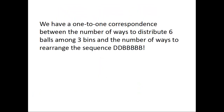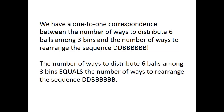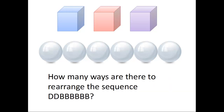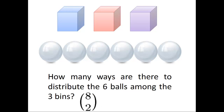Thus, we have a 1-to-1 correspondence between the number of ways to distribute 6 balls among 3 bins, and the number of ways to rearrange the sequence with 2 d's and 6 b's. Therefore, the number of ways to distribute 6 balls among 3 bins equals the number of ways to rearrange the sequence with 2 d's and 6 b's, which we already answered as our warmup problem — it's 8 choose 2. Hence, there are 8 choose 2 ways of distributing the 6 balls among 3 bins.